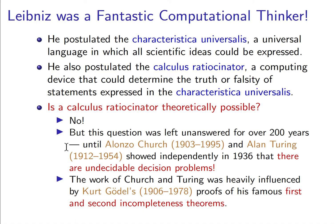The work of Church and Turing was very heavily influenced by Kurt Gödel's proofs of his famous first and second incompleteness theorems. These theorems show the limits of using proof to capture truth, and in many ways they are some of the most important theorems in logical thinking. Even though Church and Turing showed there are undecidable decision problems, they are both definitely standing on the shoulders of Kurt Gödel. We'll stop here, and that will end our topic of what is computational thinking.